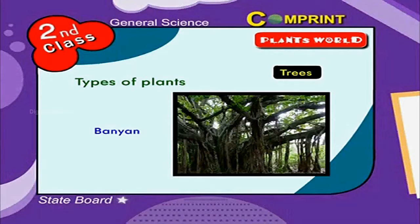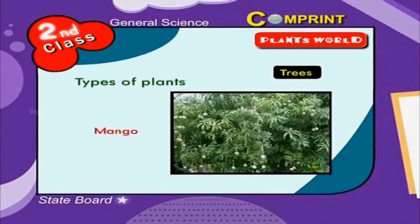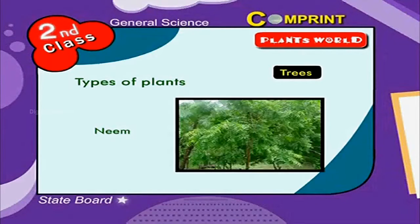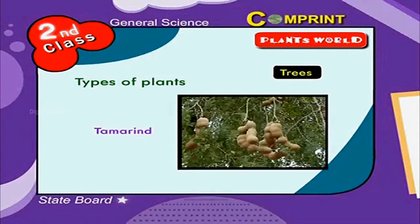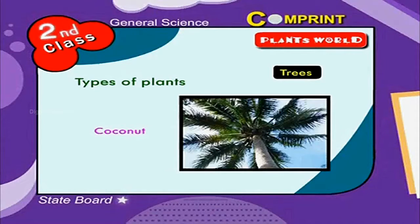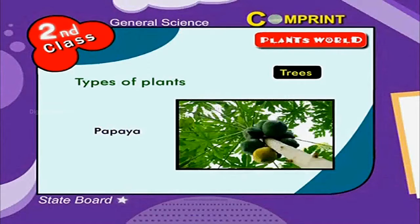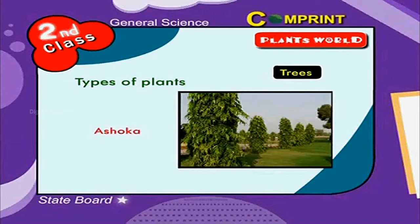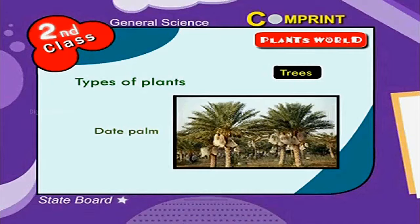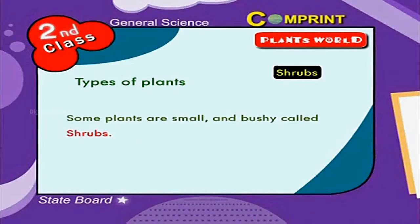For example, banyan, mango, neem, and tamarind trees have branches. Coconut, papaya, ashoka, and date palm trees have no branches. Some plants are small and bushy — these are called shrubs.